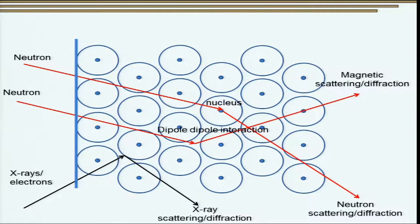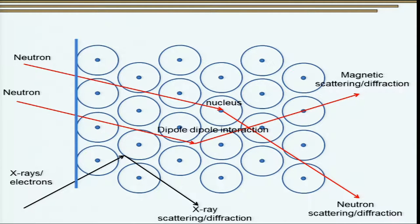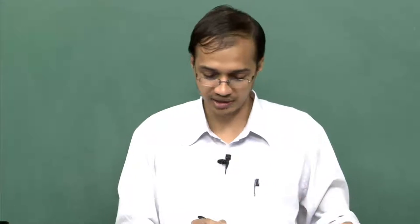This concept is shown in the figure here. If you look at a free surface comprising atoms with the dark spot at the center being the nucleus and the electron cloud surrounding it, neutrons interact with the nucleus and undergo diffraction or scattering, while X-rays interact with the outer electrons. Therefore, the probability of X-rays interacting with an atom is much higher than that of a neutron, and the penetration depth of neutrons is much higher than that of X-rays.